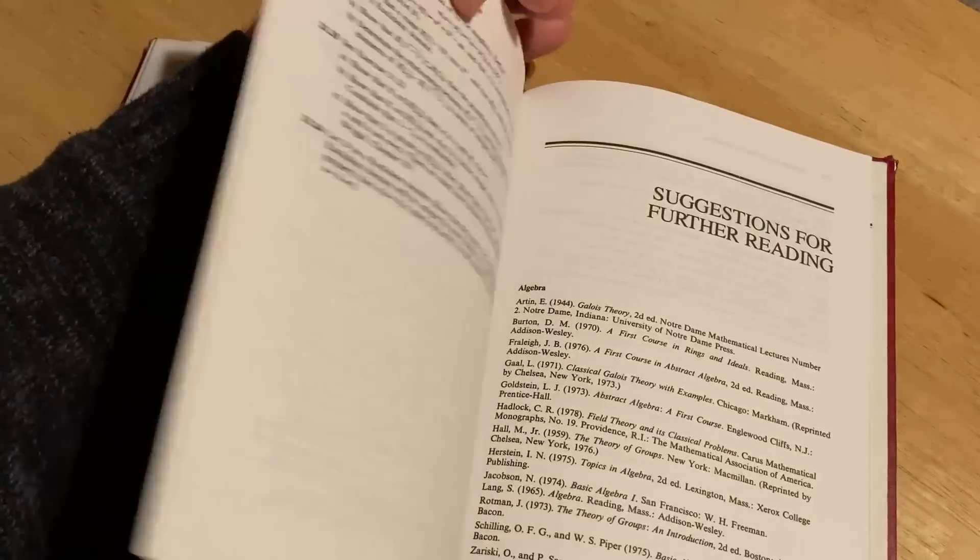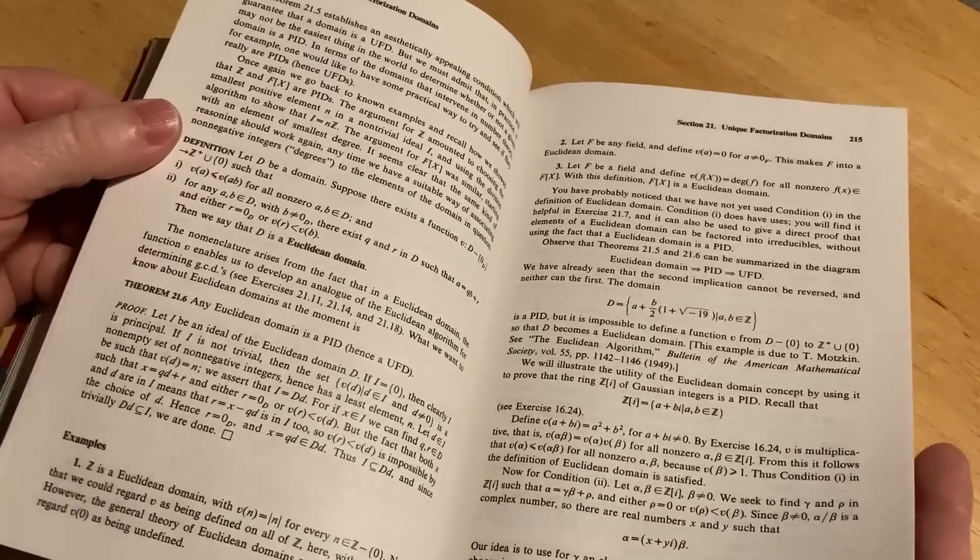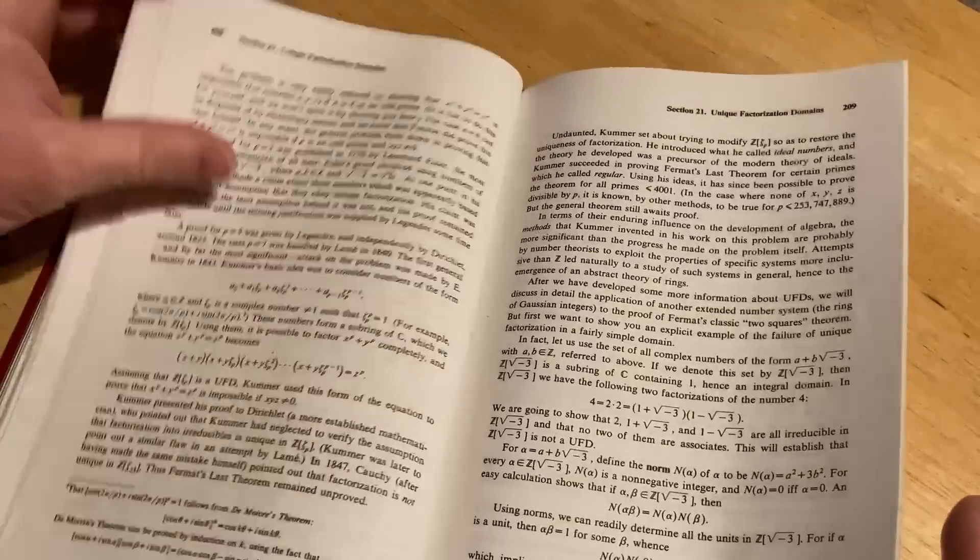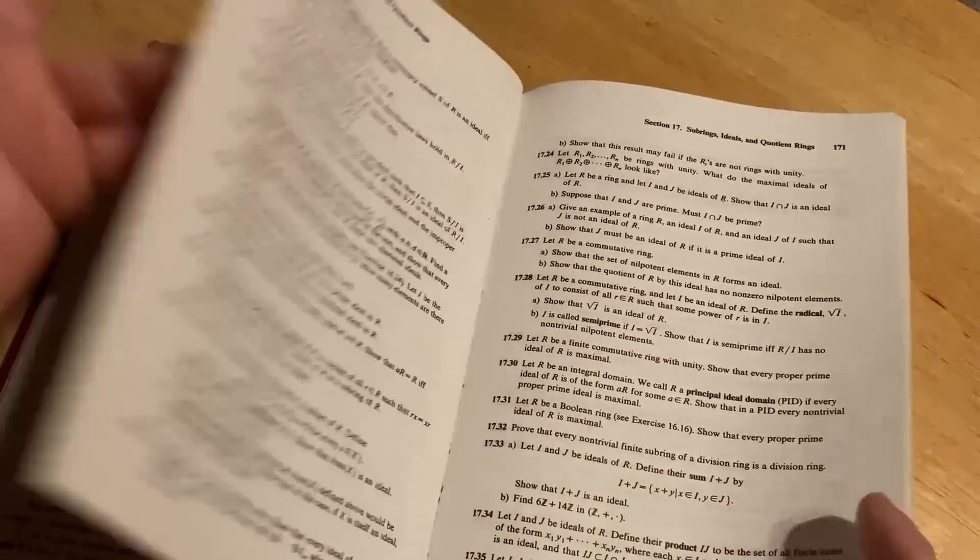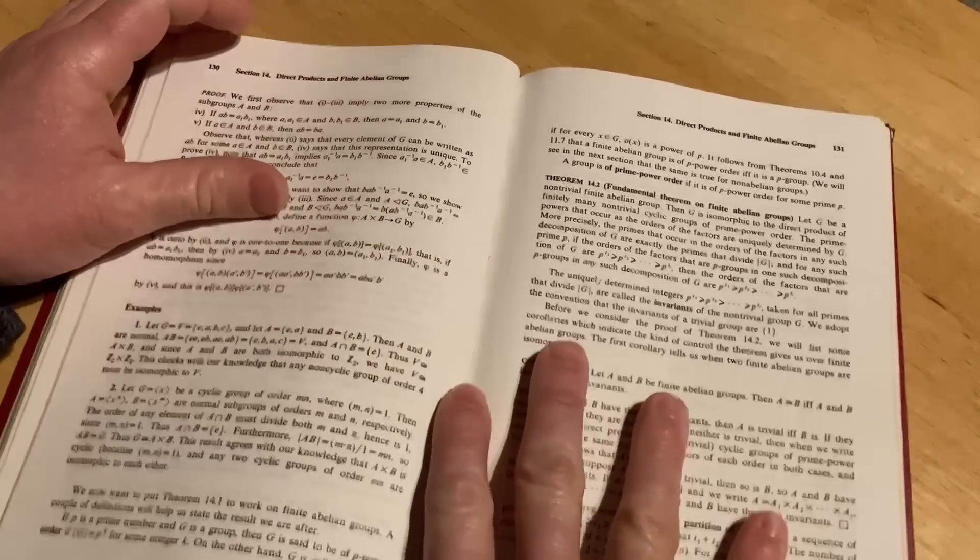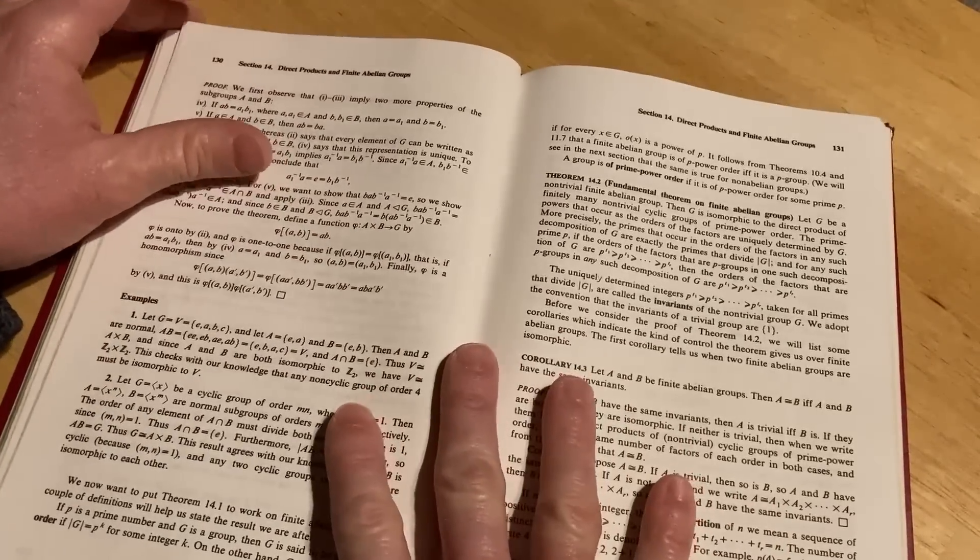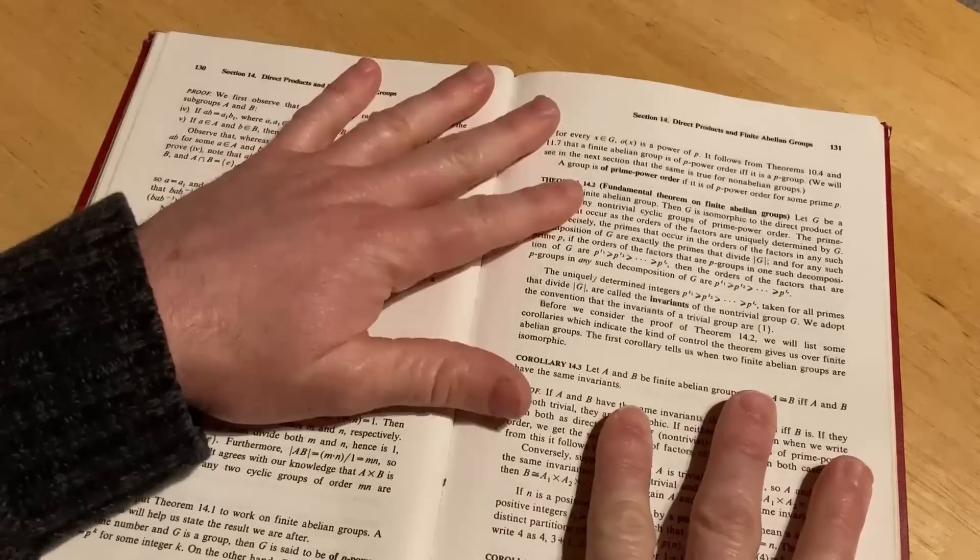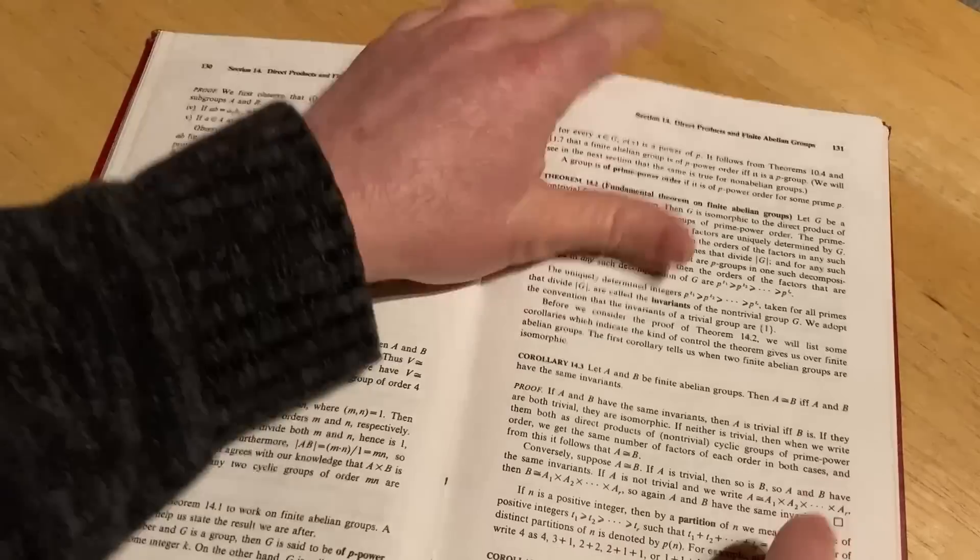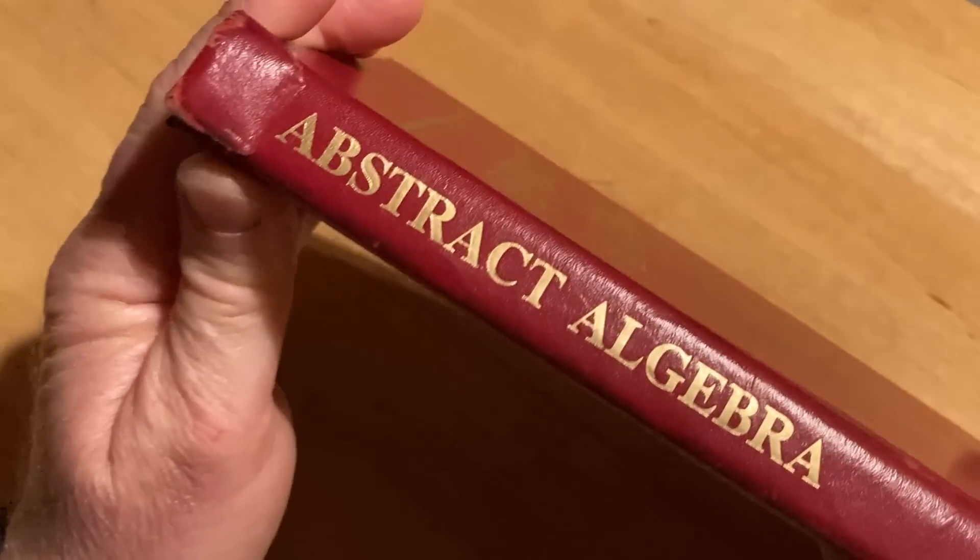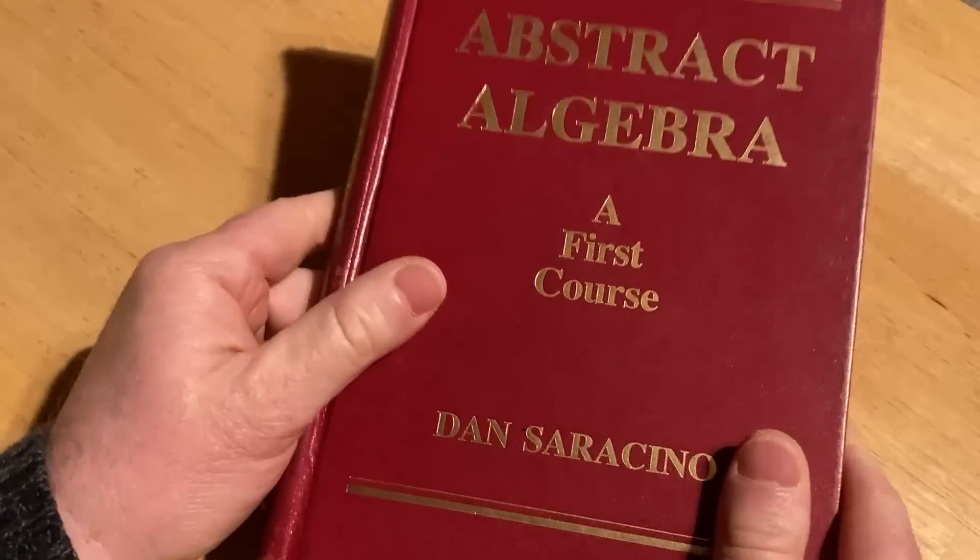And then we have Suggestions for Further Reading. That's it. So it ends. And I kind of wish it kept going because it's such a good book on abstract algebra. In my opinion, this is probably one of the best beginner books out there for people trying to learn abstract algebra. There's other really good books out there. Other people use other books. The book by Gallian is very good. It's a really good book. The Pinter book is really popular. People like that book. Abstract Algebra by Dan Saracino.